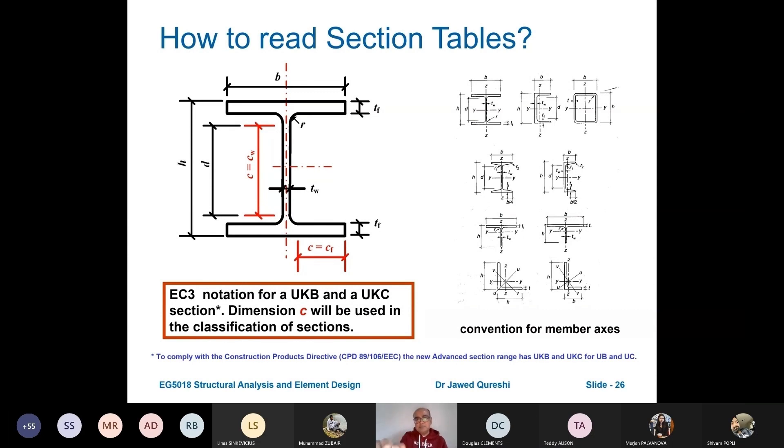the major axis, which used to be XX in other codes, is YY. So YY is the major axis, ZZ is the minor axis.